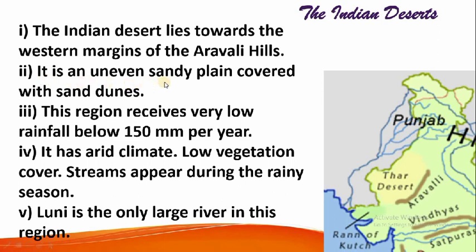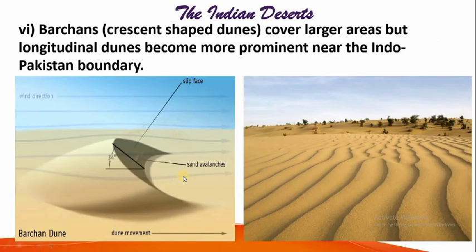The Thar Desert is an uneven sandy plain covered with sand dunes all over the desert area. Sand dunes are very common here. This area receives very less rainfall — just 15 centimeters per year. It has an arid climate, meaning dry climatic conditions, and low vegetation cover. River streams appear during the rainy season and then disappear. Luni is the only largest river of this area.